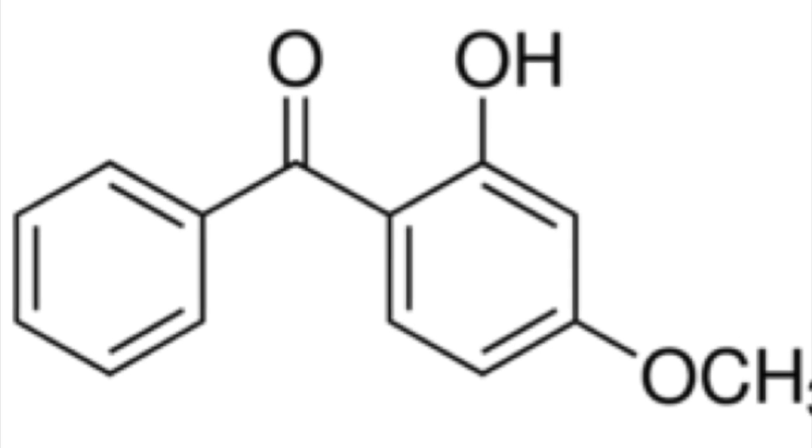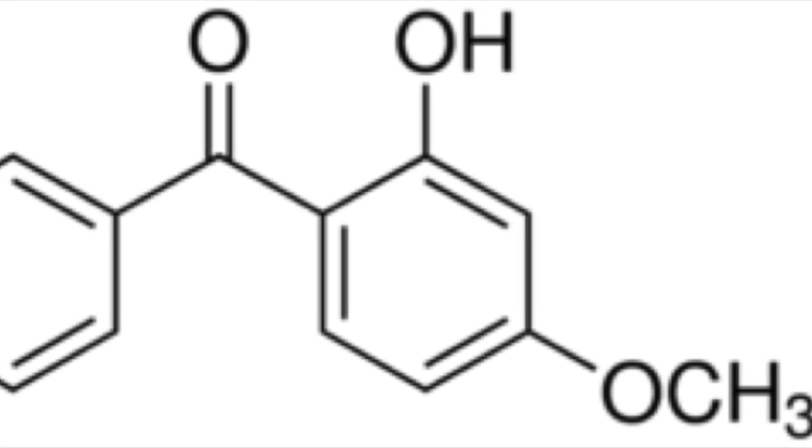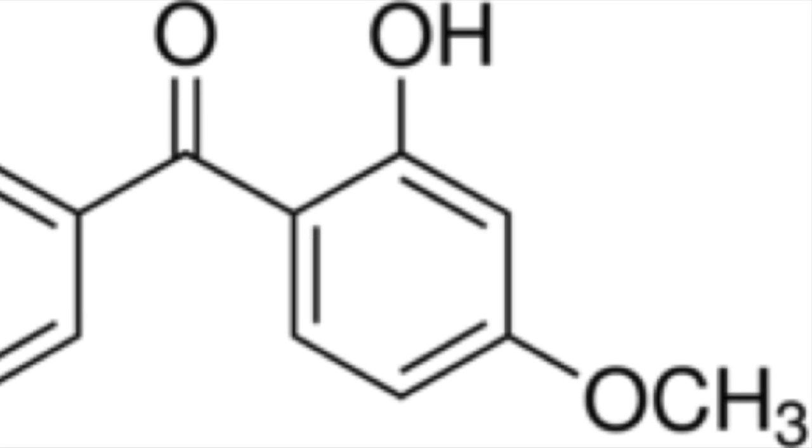The molecular structure of oxybenzone consists of two benzene molecules attached by an aromatic ketone group. One of the benzene molecules has an alcohol group and an ether group attached.